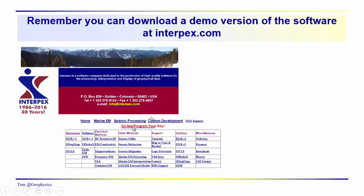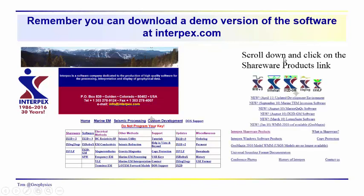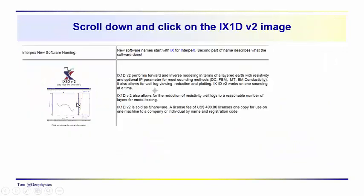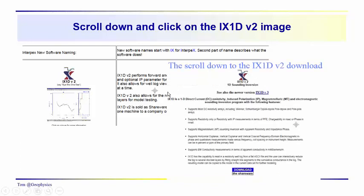If you go to this site, you'll see a window with a lot of software available through Interpex. Scroll down on this window and click on the shareware products link. On the next window that comes up, you'll see an image — you'll have to scroll down to get to this area. Click on this image, the IX1D V2 model window, and another screen will come up where you scroll down to the IX1D V2 download.